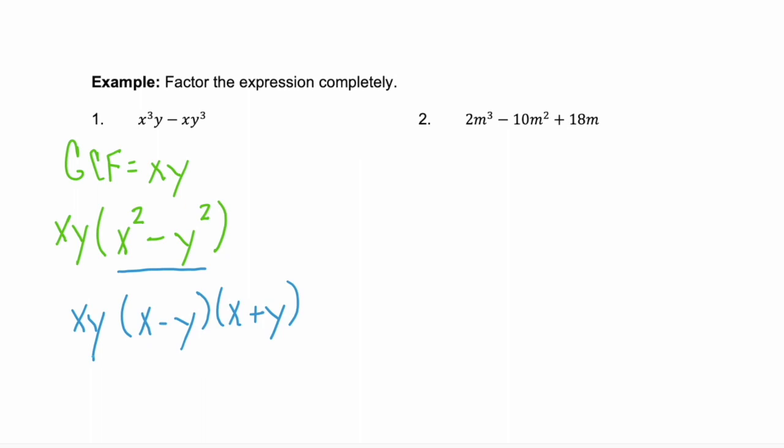Now let's look at example 2. Do we have a GCF here? Of course we do. All of these terms have the coefficient 2 in common, and they also have an m in common. If we factor out that GCF of 2m, we're left with the trinomial m squared minus 5m plus 9.